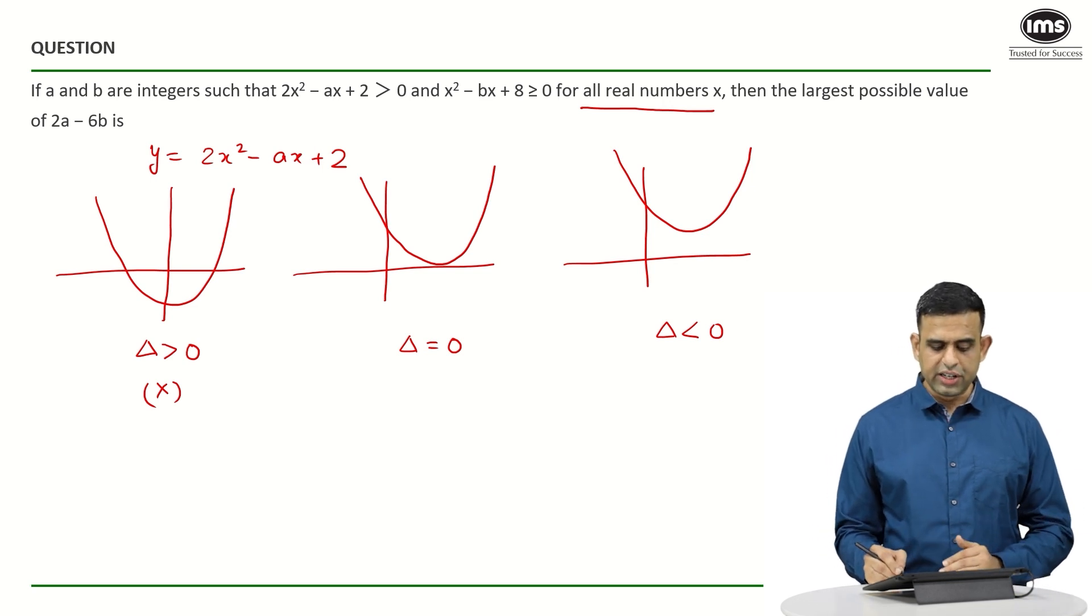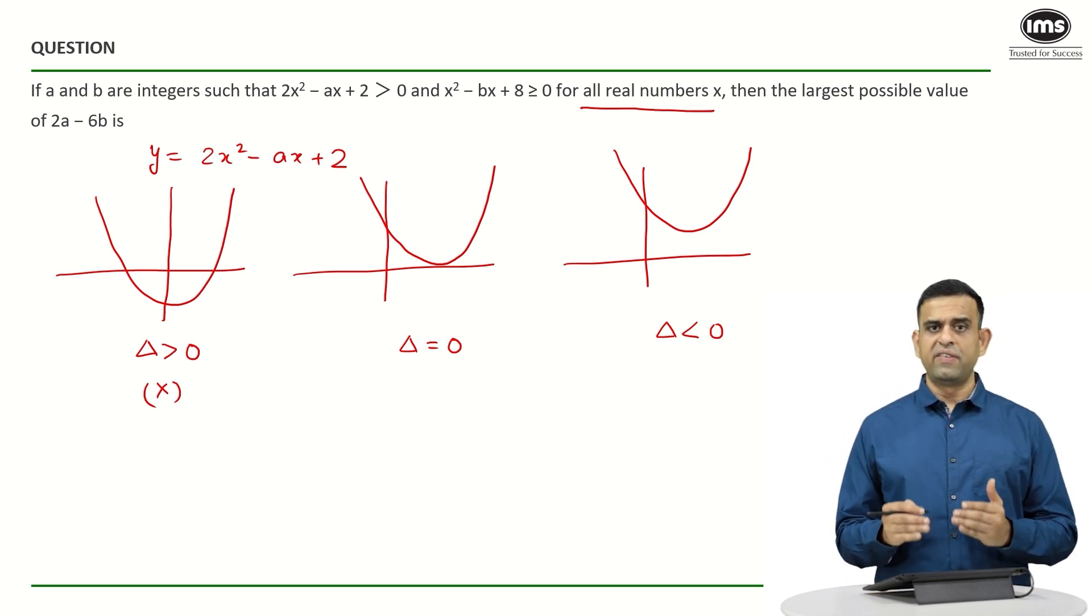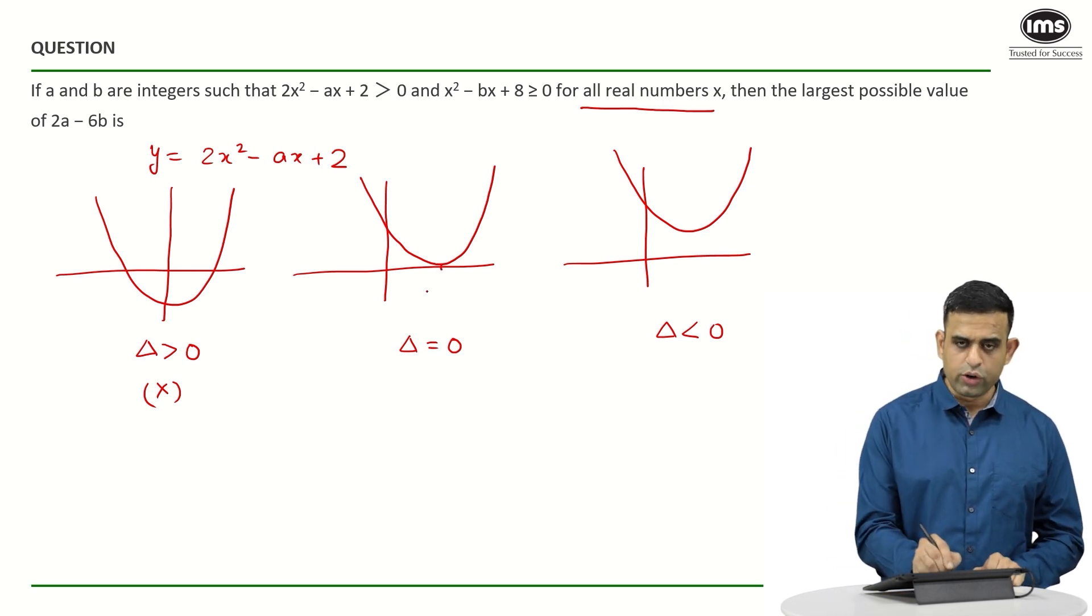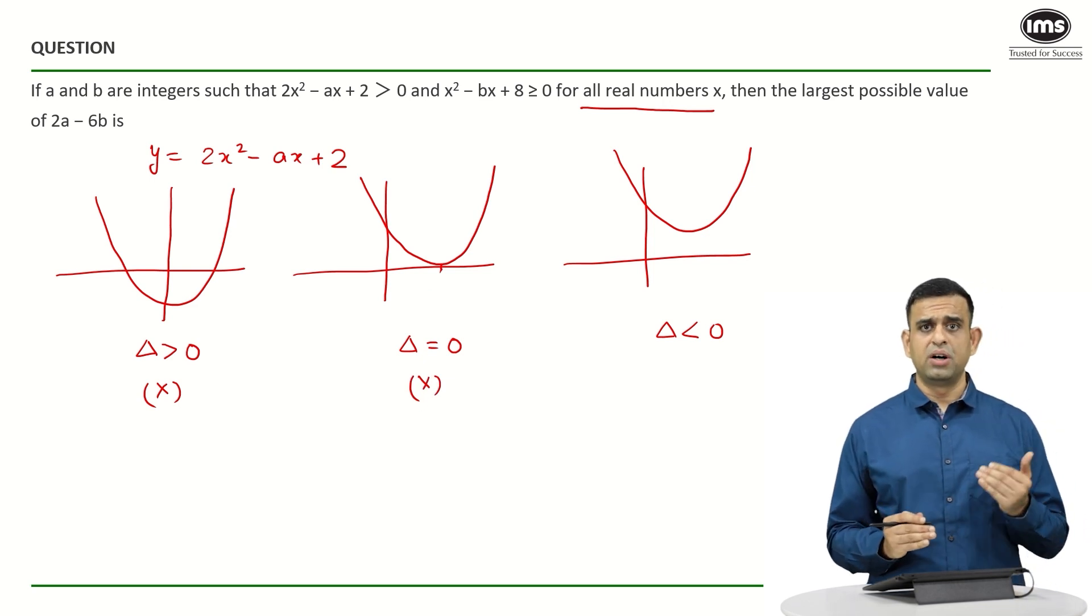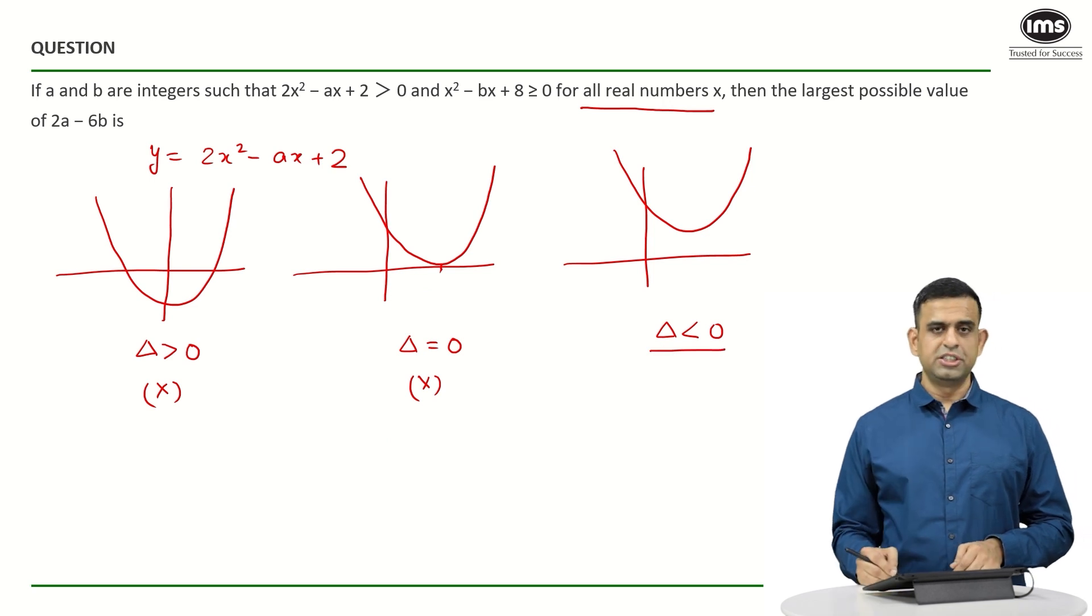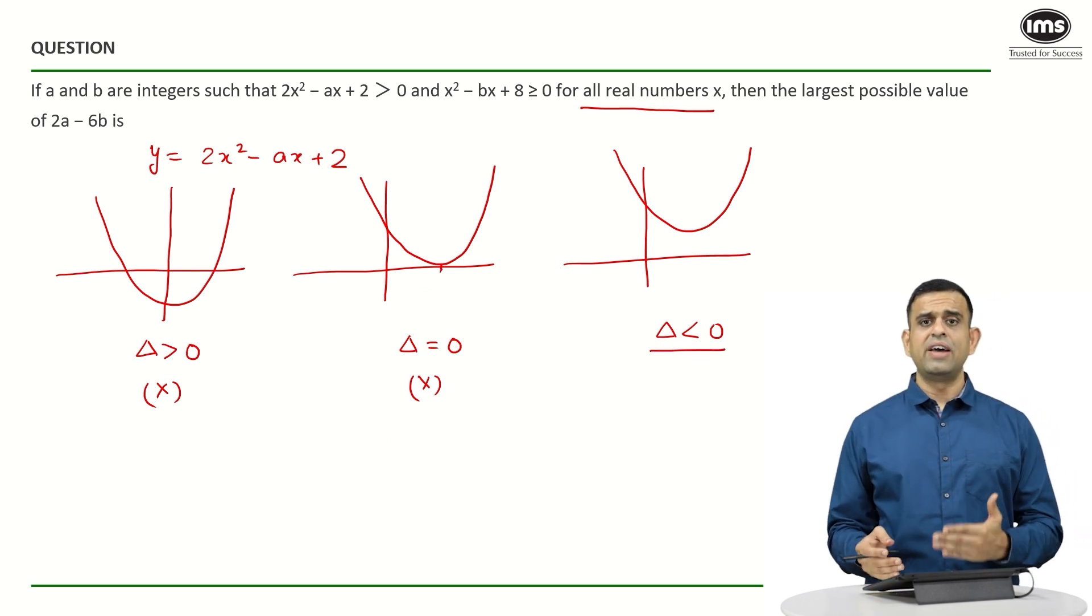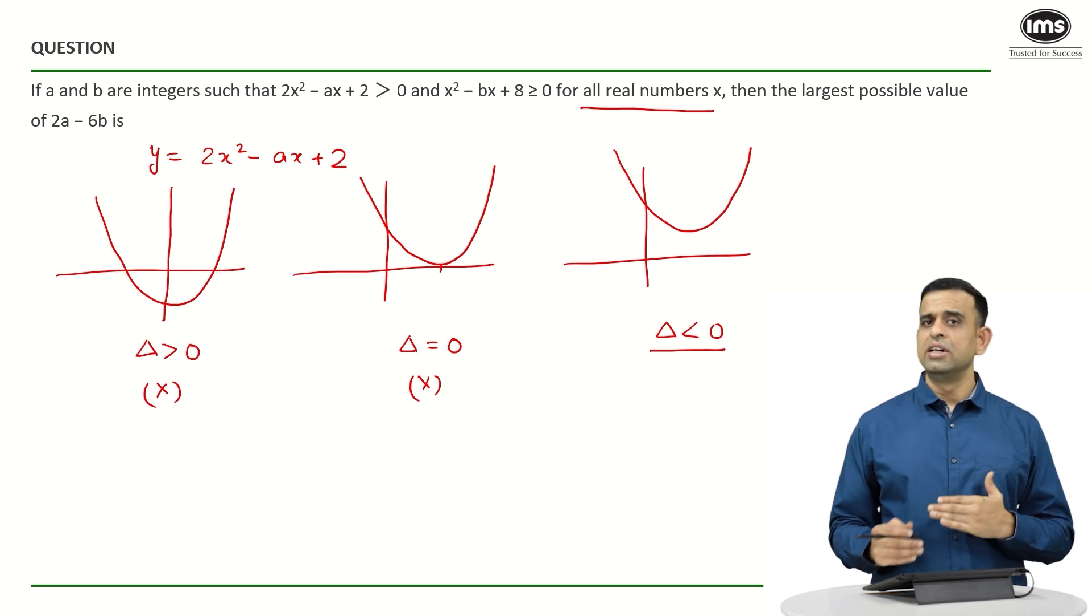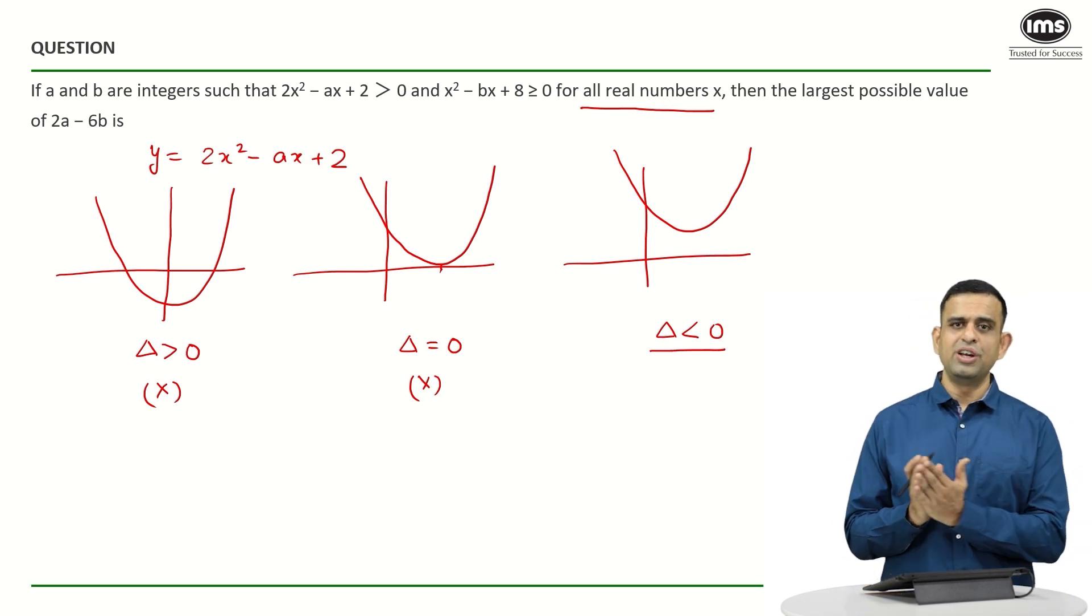Similarly, if you look at the second scenario here, the value of y is either positive or equals to 0, it becomes equals to 0 at this particular point, the root. This can also be ruled out since I want y to be more than 0. If I look at this particular situation here, the graph never cuts the x axis. It is always above the x axis. It simply means that y has to be positive.